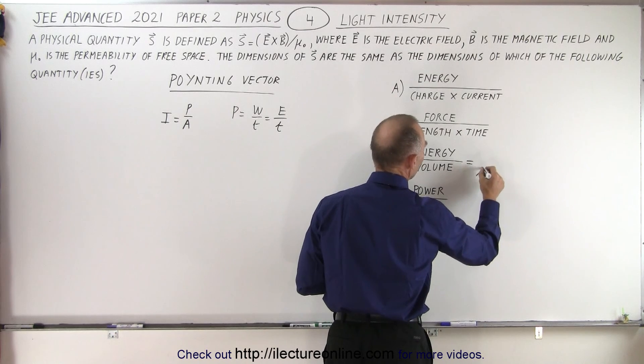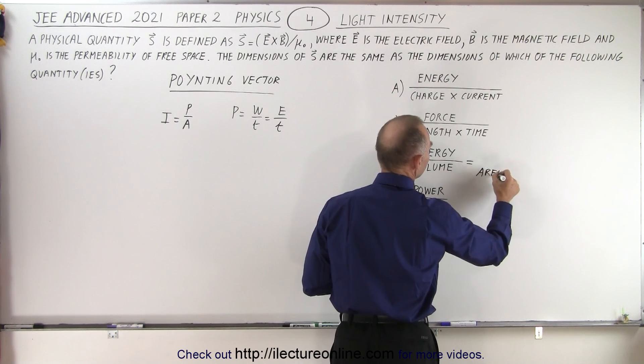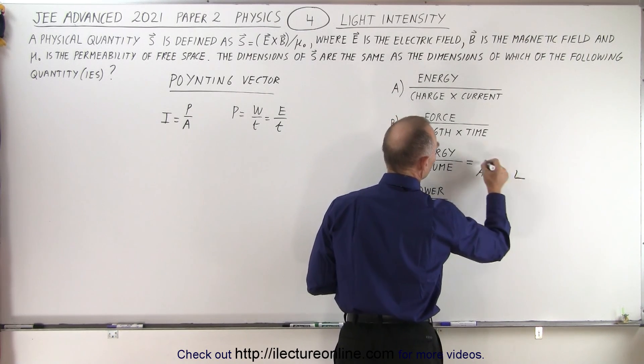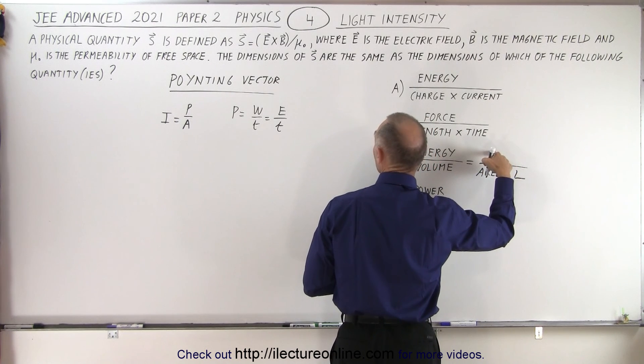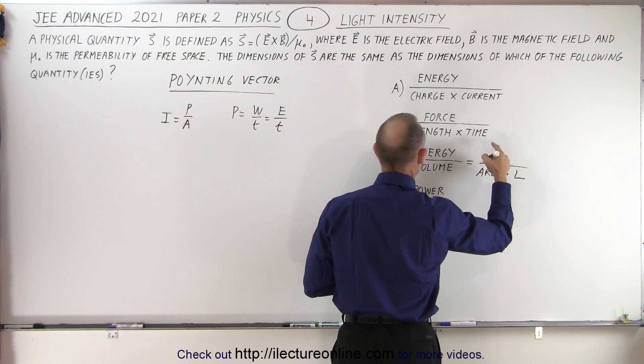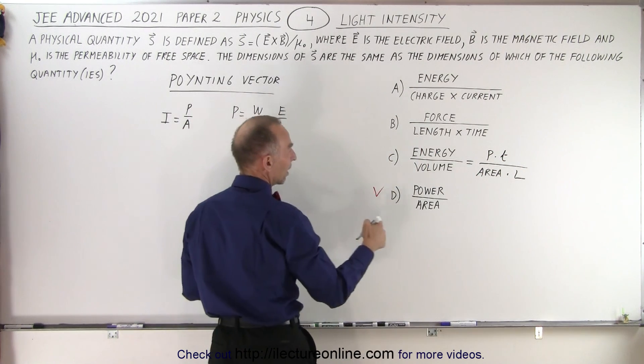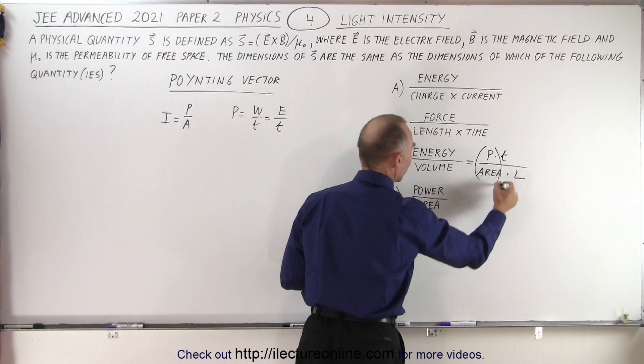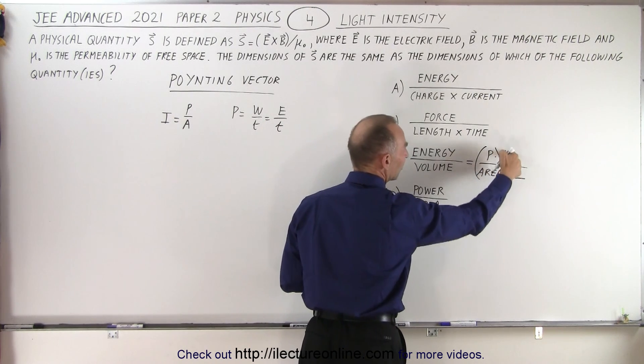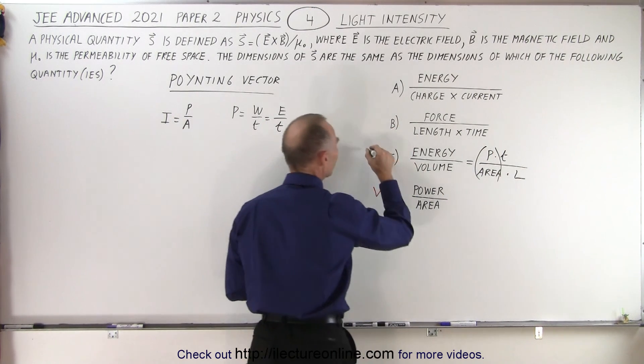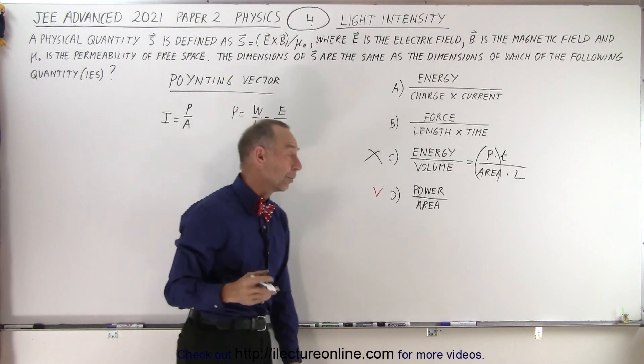So this would be equal to area times length divided, and then in the numerator, we get energy. That would be power times time. Energy would be power times time. So we have power over area, but times time over L. So you know that this cannot equal power over area.